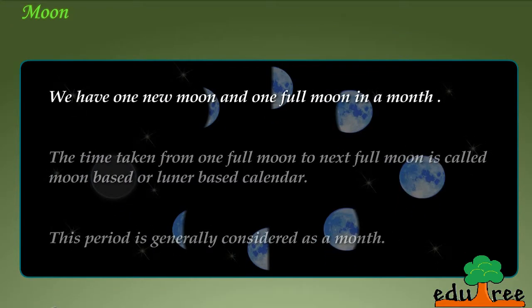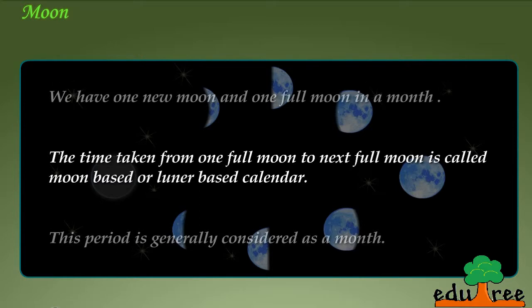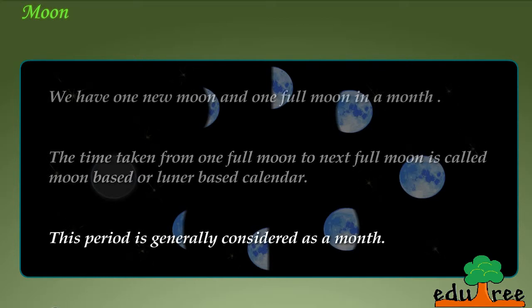We have one new moon and one full moon in a month. The time taken from one full moon to next full moon is called moon based or lunar based calendar. This period is generally considered as a month.